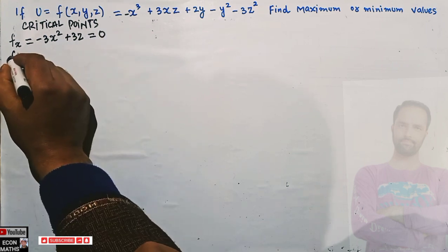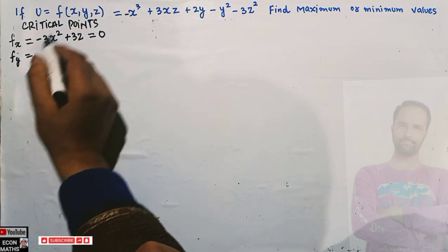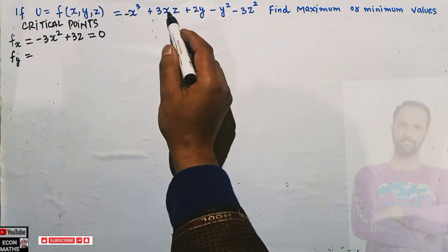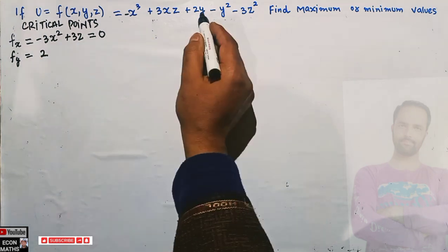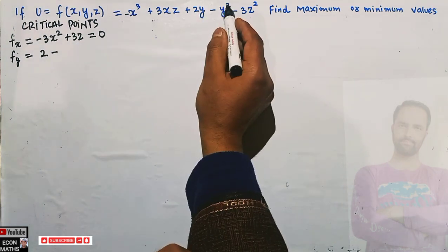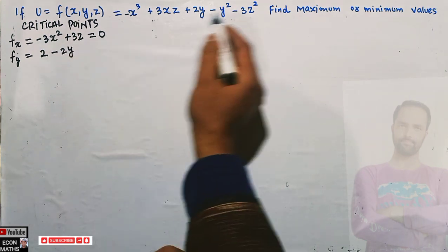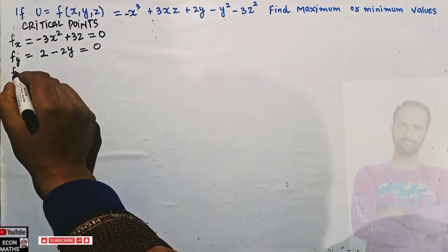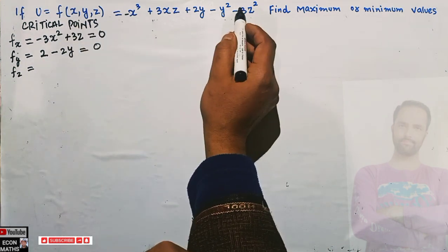Similarly, f_y — partially differentiating with respect to y — gives us: the derivative of 2y is 2, and the derivative of y² is 2y, so we get 2 - 2y = 0. And f_z — partial differentiation with respect to z — gives us: 3x - 6z = 0.